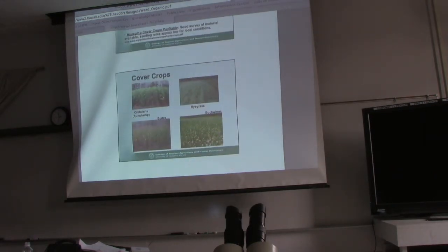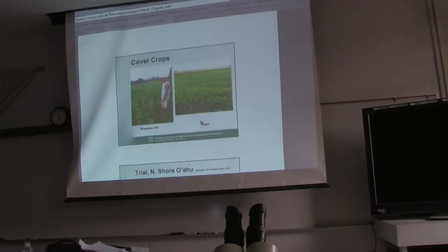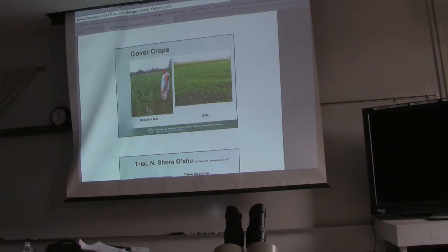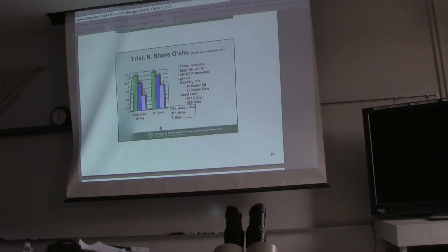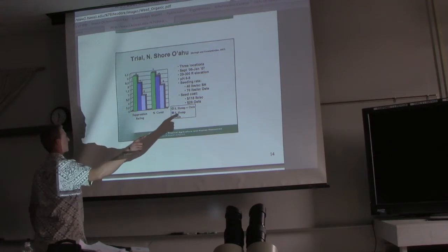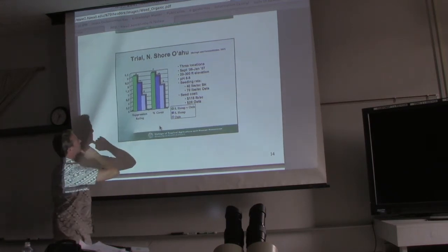Crotalaria, the sun hemp, rye grass, sudex, buckwheat - buckwheat's a great one to bring in pollinators. Cover crops, brassica mix. You can actually mix them together, which for cover crops is highly recommended. You can have sun hemp which has got apical growth, and then you've got lab lab which is kind of creepy and grows on top of each other. It makes this huge mass of biomass and there's no weeds going in there for sure. Oats is a great one because you can harvest them and sell. This is a trial done on North Shore of Hawaii - sun hemp and oats mixed together versus just sun hemp and versus just oats. When you combine them together, you get a much better return, much better cover.